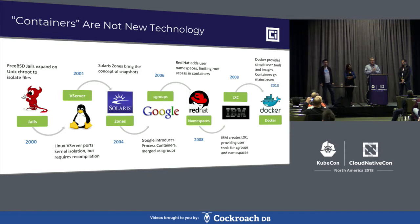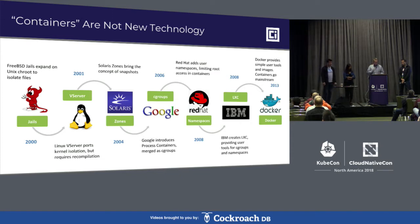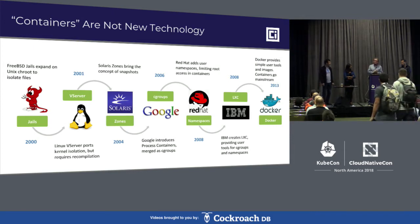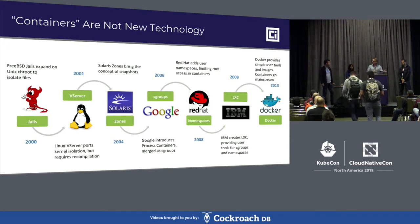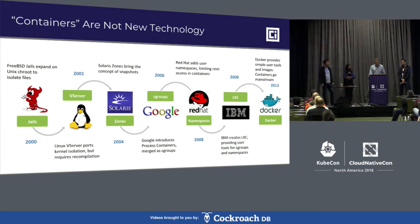Solaris, the leading flavor of Unix at one point, introduced zones. Google was a big part of massively leveraging containers back when most people were not focused on the technology, because it was still fairly challenging to effectively leverage. Red Hat came along with namespaces, and IBM collaborated on a technology called LXC to unify some of that and make it more usable. But containers really didn't take off until Solomon Hakes and the early team at Docker got together.